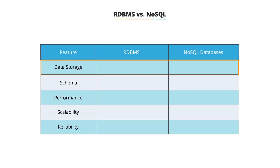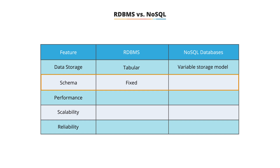RDBMS versus NoSQL. For data storage in an RDBMS, data is stored in a relational model in tabular format with numerous rows and columns. NoSQL comprises a host of different databases with different data storage models. For schemas, each record in an RDBMS follows a fixed schema — the columns are defined and locked before data entry. On the other hand, schemas in NoSQL are dynamic; you can add new columns at any time. Relational databases are not optimized for high performance in applications where massive data is stored and processed frequently. NoSQL databases perform much better in scenarios with large amounts of data.